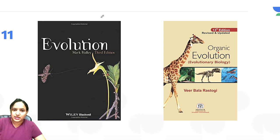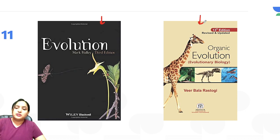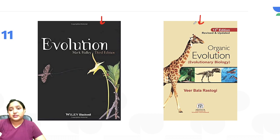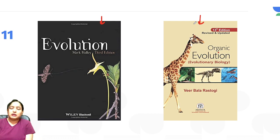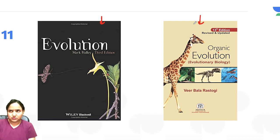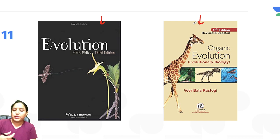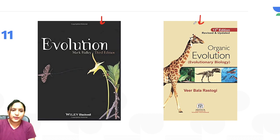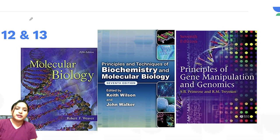For Unit 11, evolution, there is one option I'll mention here, and also Veer Bala Rastogi — an Indian book which is very good. I read it during my bachelor's or around 12th class. It is an amazing book that you can definitely read for evolution.